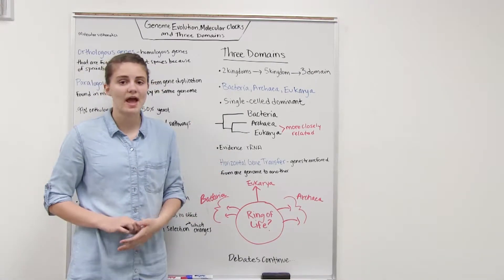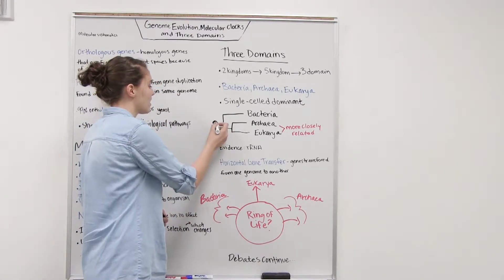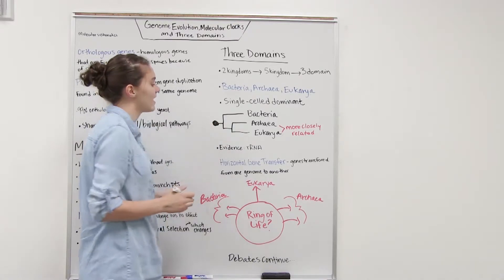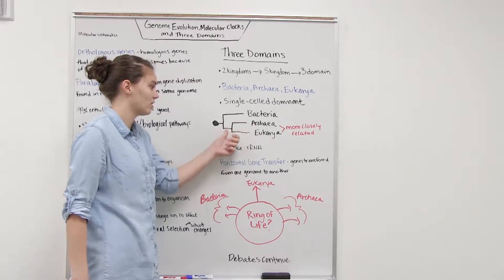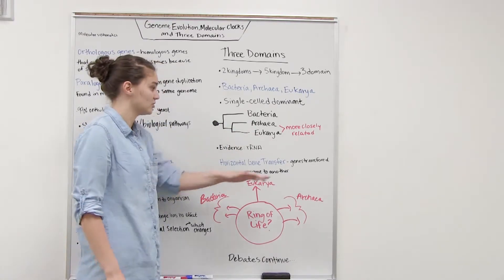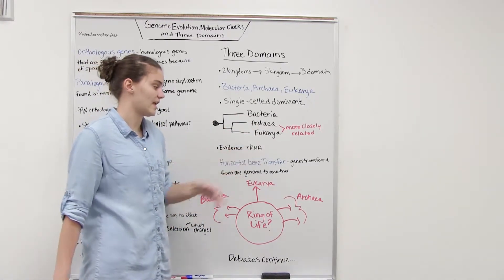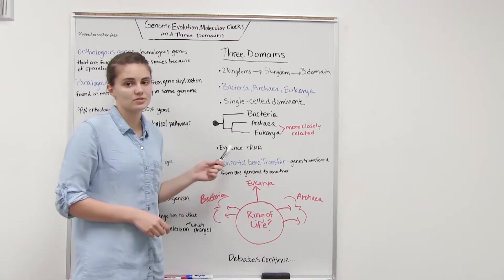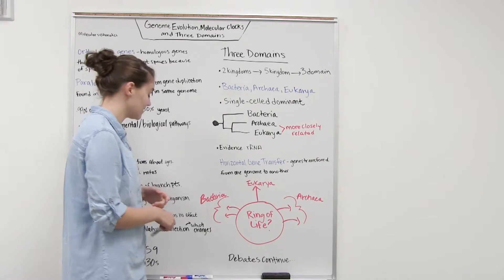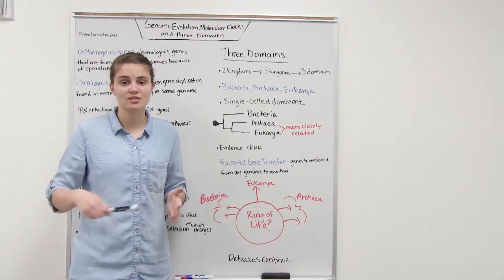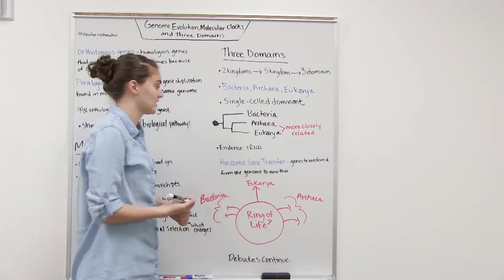There's one hypothesis in how these three domains of life came to be, that we had some common ancestor, some of the first life, and bacteria diverged first. Then archaea and eukarya share a more common or recent ancestor and so they're more closely related than to bacteria. A lot of this evidence comes from our RNA. RNA is what's used to make ribosomes and RNA is useful because the time in which it evolves and changes, its genome is very slow, and so we're able to track these changes from a very long time ago.